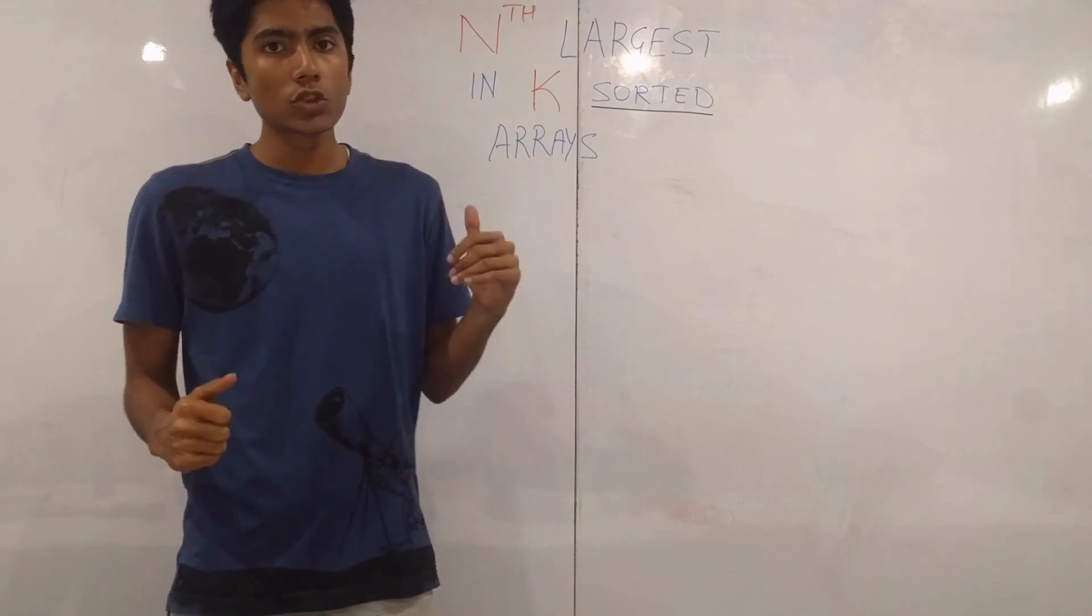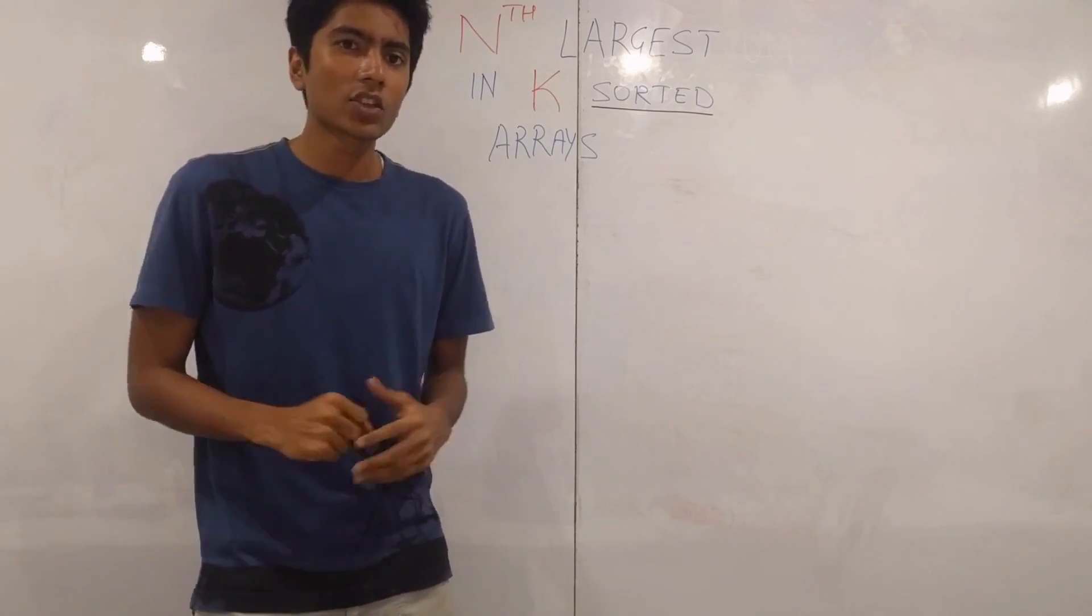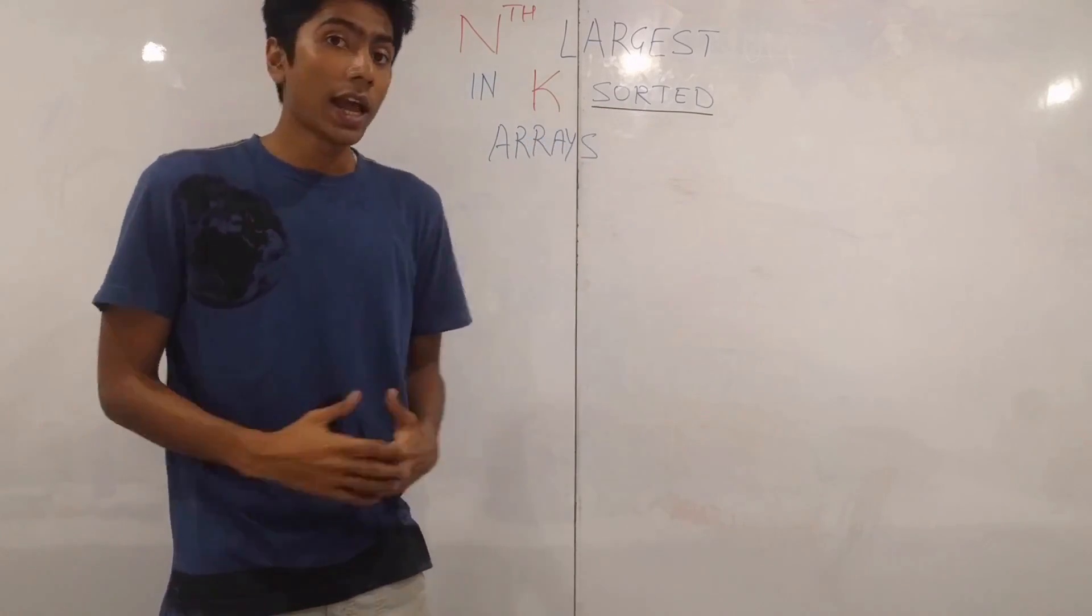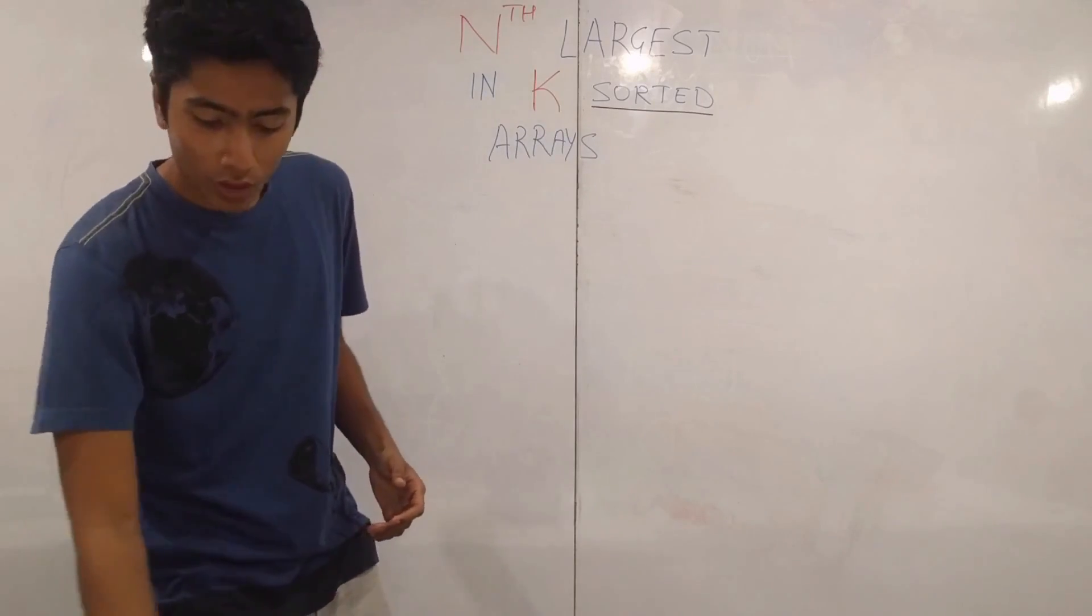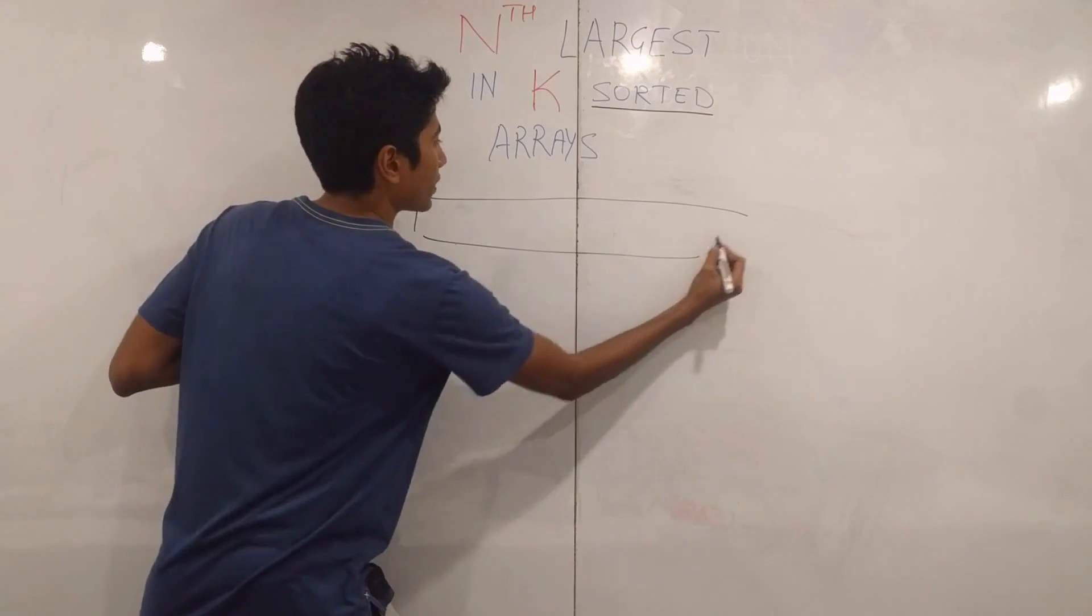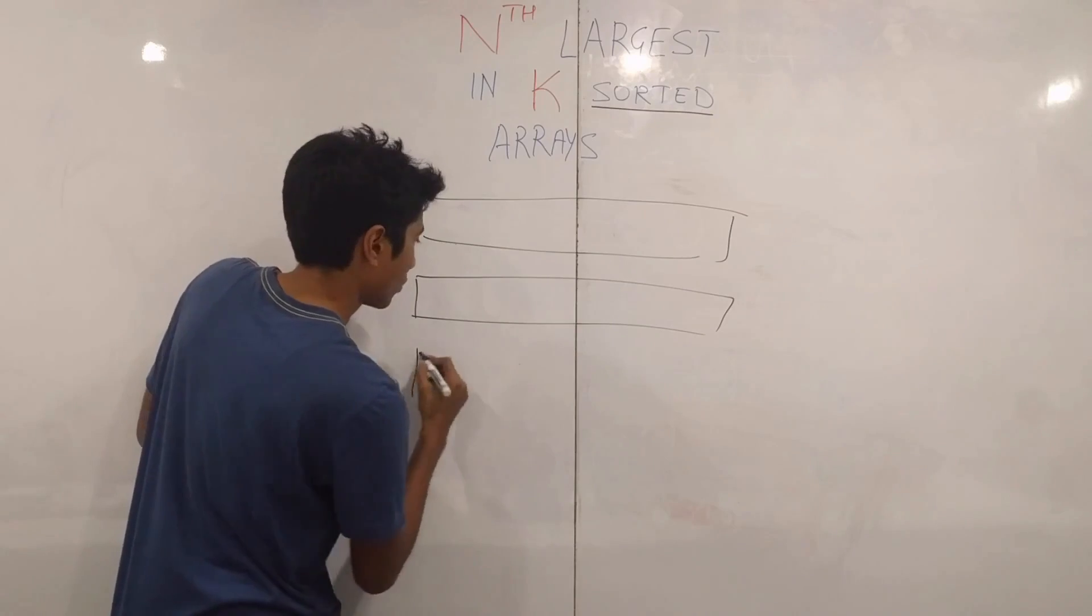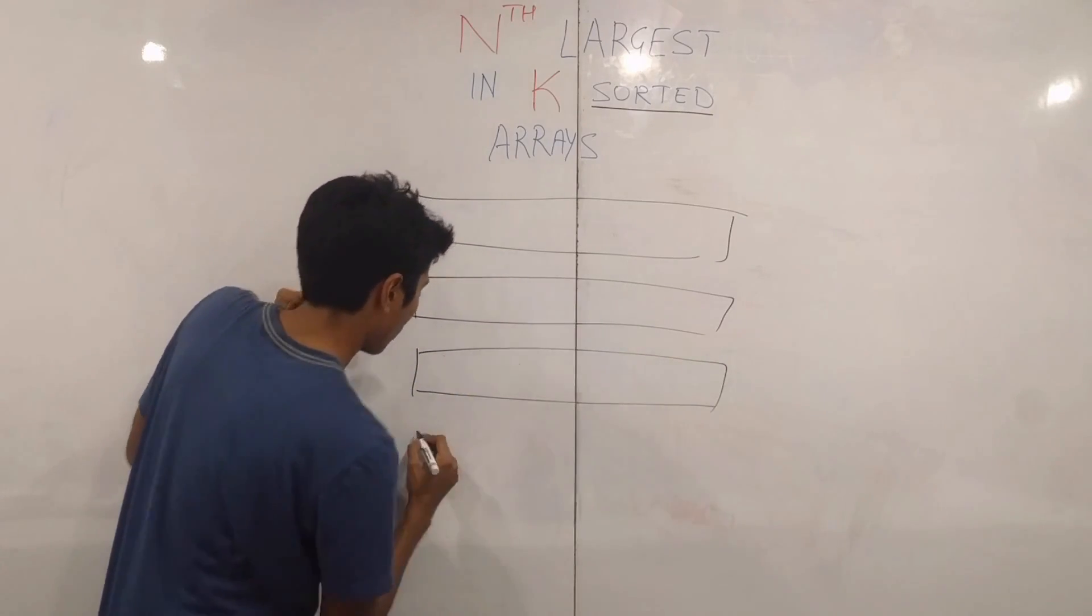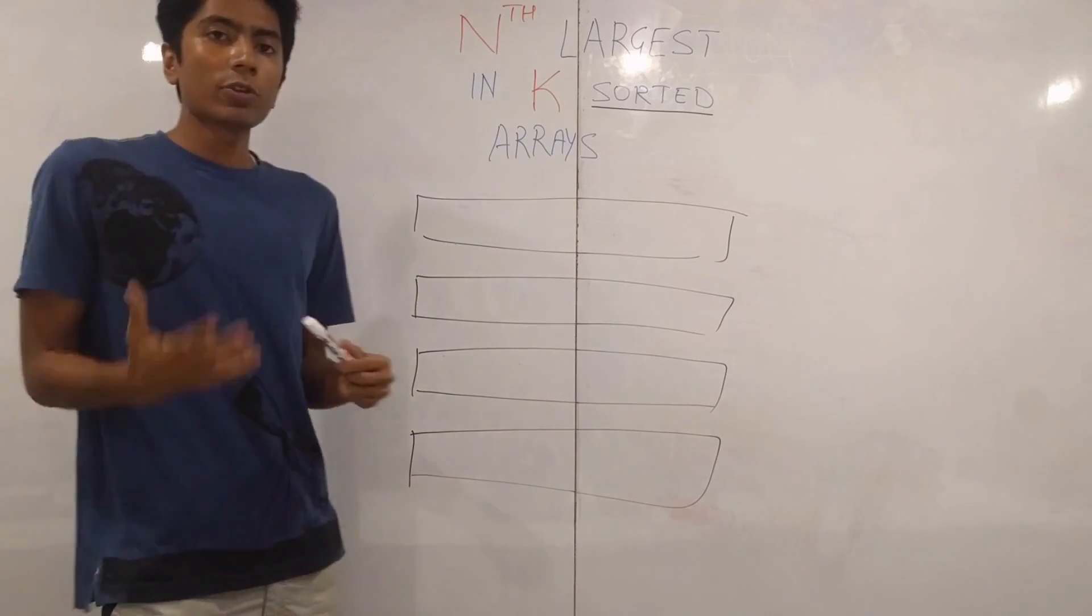So what we are going to be doing is using some sort of binary search. You can guess that there might be some binary search involved because these arrays are sorted and you want a particular index from these arrays. So let's say that we have these arrays. I'm just going to have four of them. And this is our last one. And we are looking for the kth largest.